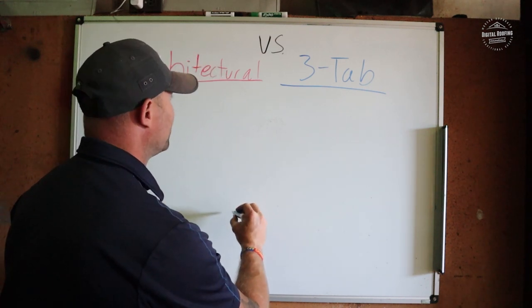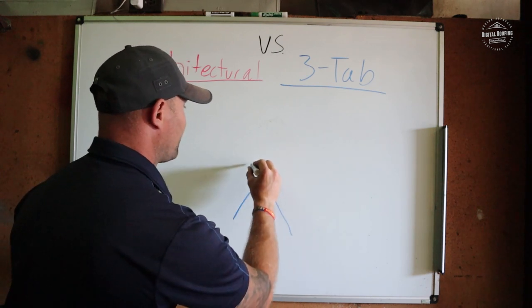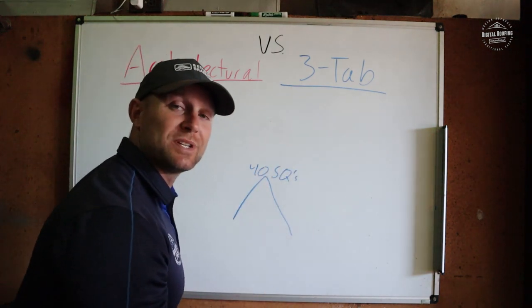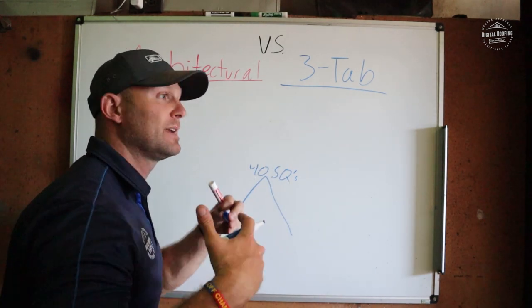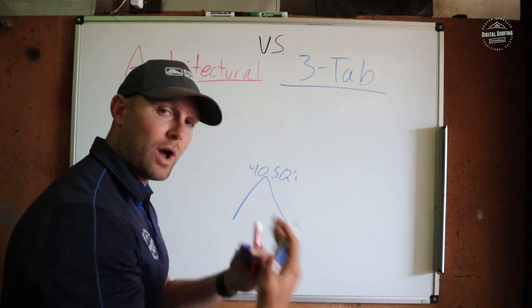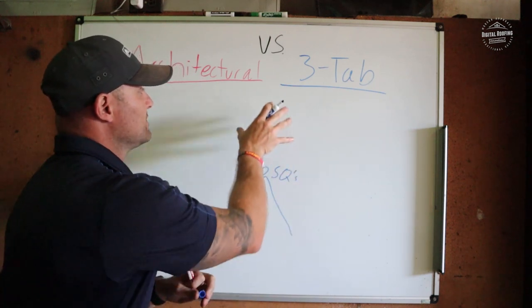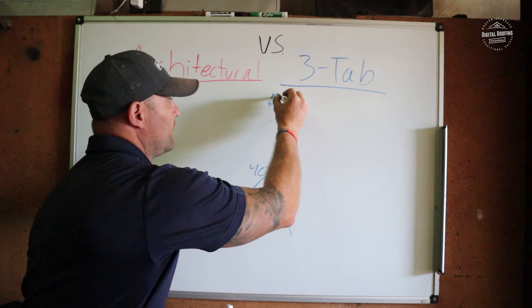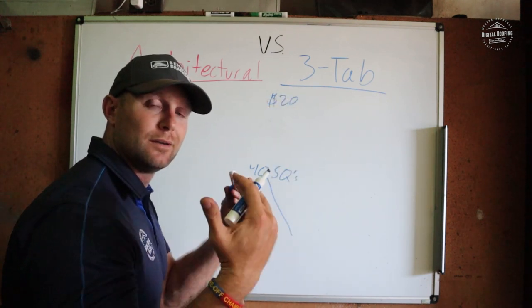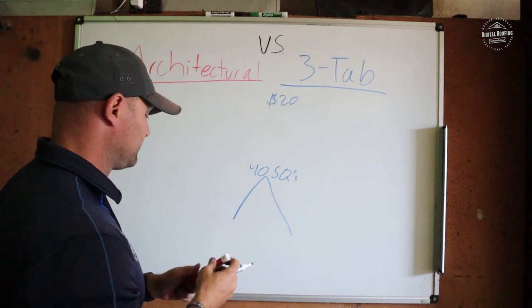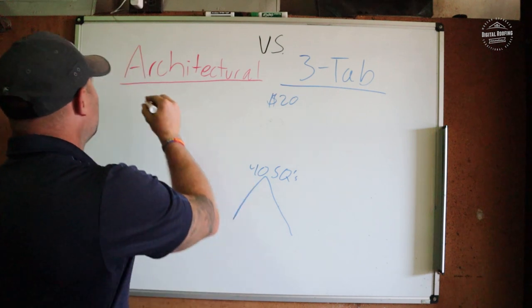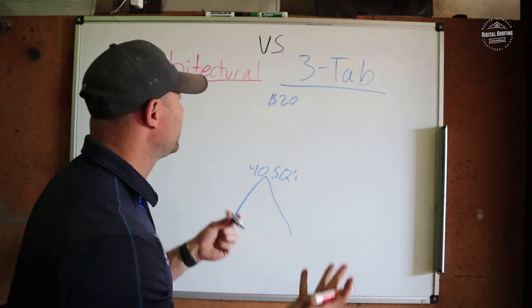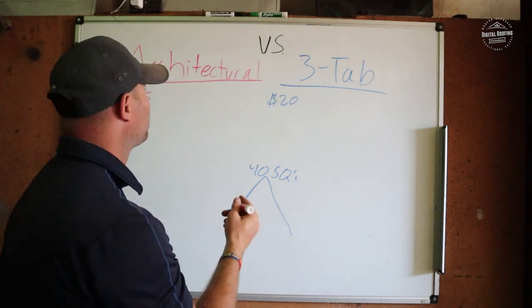Our roof is 40 squares. Now this is contractor price — not adding in labor, licensing, and taxes. We're just talking about material price between the two. In 2020, you're going to pay about $20 per bundle for a three-tab shingle versus about $25 for a bundle of architectural. So it's really not that much difference when talking about per bundle.